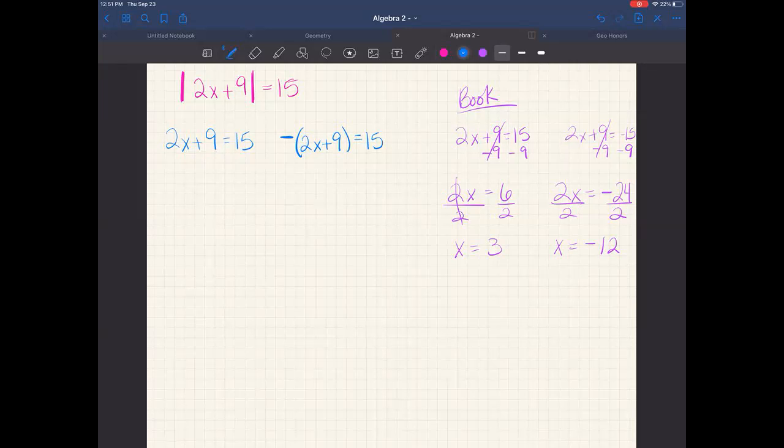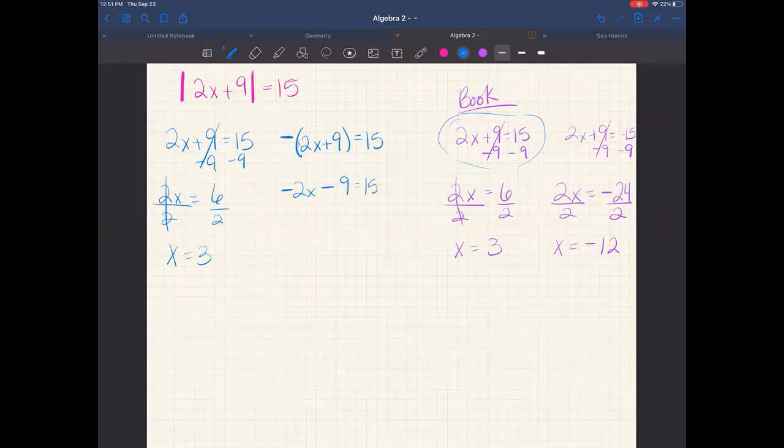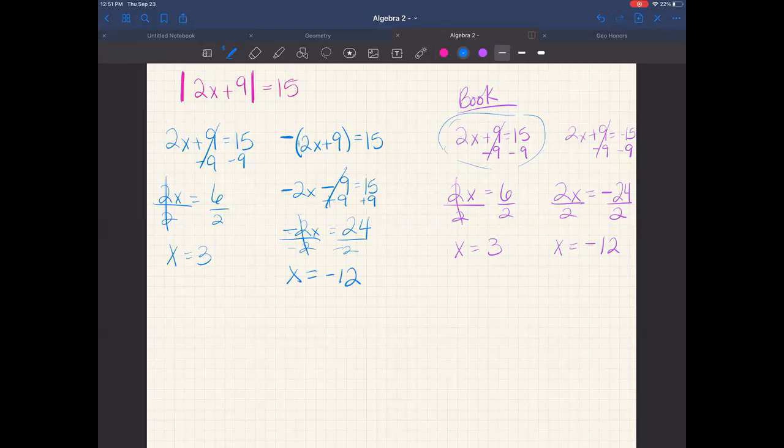If we're doing it my way, this first one is just like this one over here. So 2x equals 6, divide by 2, and that is x equals 3. Now this one, remember this is a plus 2x, so a positive and a negative become negative. I add 9 to both sides. That gives me negative 2x equals positive 24 this time. But when I divide by negative 2, I still get x equals negative 12. So you see, I get the same answer no matter which way I do it.